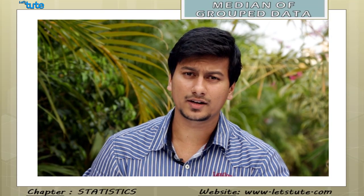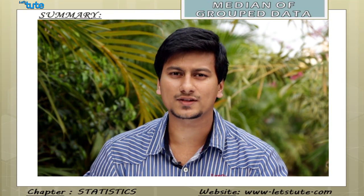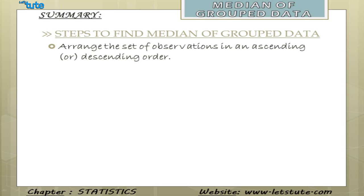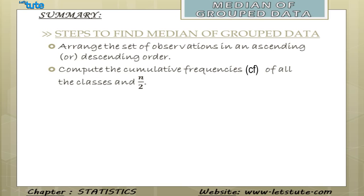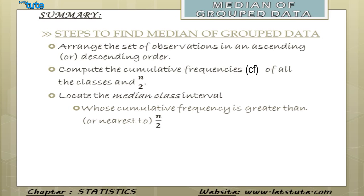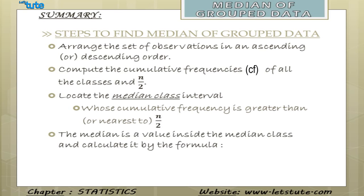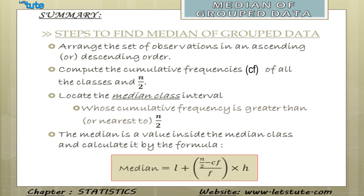Now that we have calculated the median of grouped data, let us summarize all the steps. First, arrange the observations in ascending or descending order. Then compute the cumulative frequencies of all classes and find N by 2. Next, locate the median class interval. Finally, calculate the median using the formula: L + (N/2 − CF) / F × H.